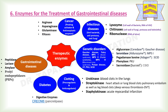PEPs (prolyl endopeptidases) are a group of serine proteases that break down proline residues in peptides. Recently, PEPs have been evaluated as a possible therapy for celiac disease because of their capacity to enhance the degradation of gluten peptides in the gut. Celiac disease is a multifactorial disease featured by an inflammatory response to ingested gluten in the small intestine. Gluten peptides are rich in proline and glutamine; therefore, prolyl endopeptidases are very important enzymes for the treatment of celiac disease.